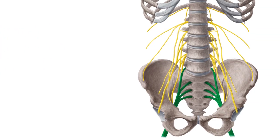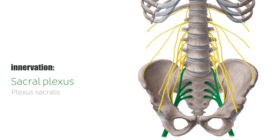This muscle group is primarily supplied by direct branches of the sacral plexus. To a small degree, the pudendal nerve contributes to its innervation as well.